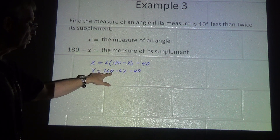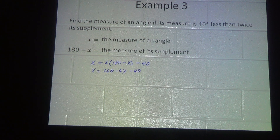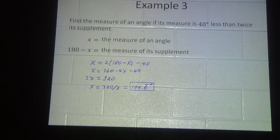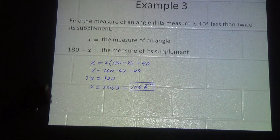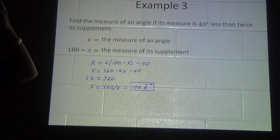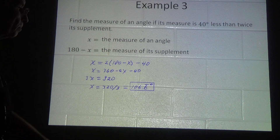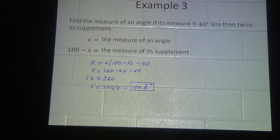We combine like terms and move x to the other side, giving us 3x equals 320. Dividing both sides by 3 gives us x equals 320 over 3, which comes out to 106.6 repeating degrees. The bar over the 6 means that 6 repeats as far as you want to carry it.